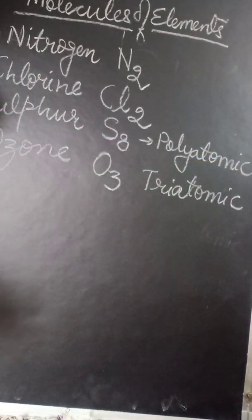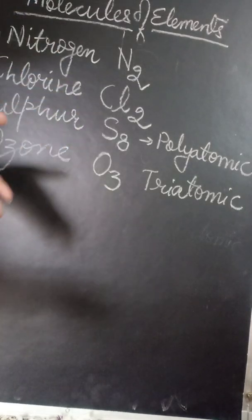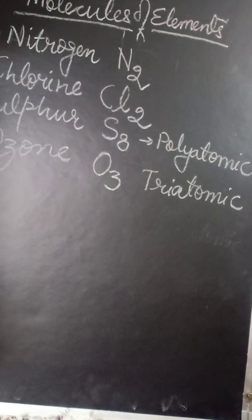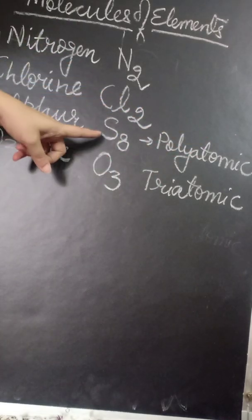We can go like this: mono, di, tri, tetra, penta, hexa. So to avoid all those names, we can say polyatomic molecule. Phosphorus is P4, sulfur is S8. Chlorine and nitrogen both are diatomic molecules.